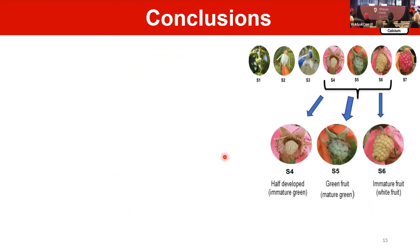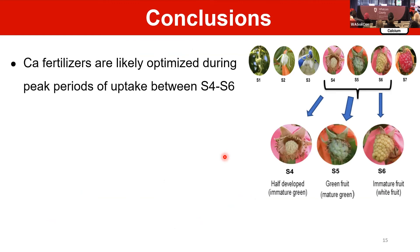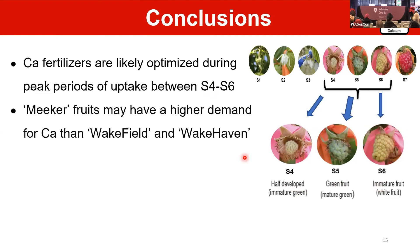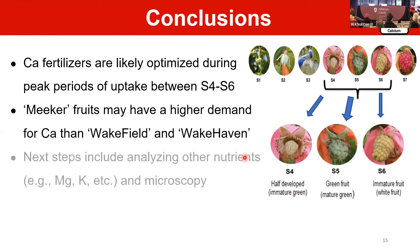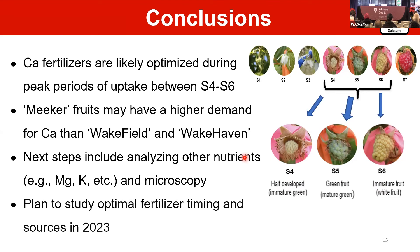Our conclusion is that calcium fertilization should be optimized during the peak uptake period between S4 and S6 — between late developing and immature fruit — and this is the best period for applying calcium. Meeker fruit may have a higher demand for calcium compared to Wakefield and Wakehaven. Next steps include analyzing all nutrients like calcium and potassium, microscopy studies, and planning optimal fertilization timing in 2023.